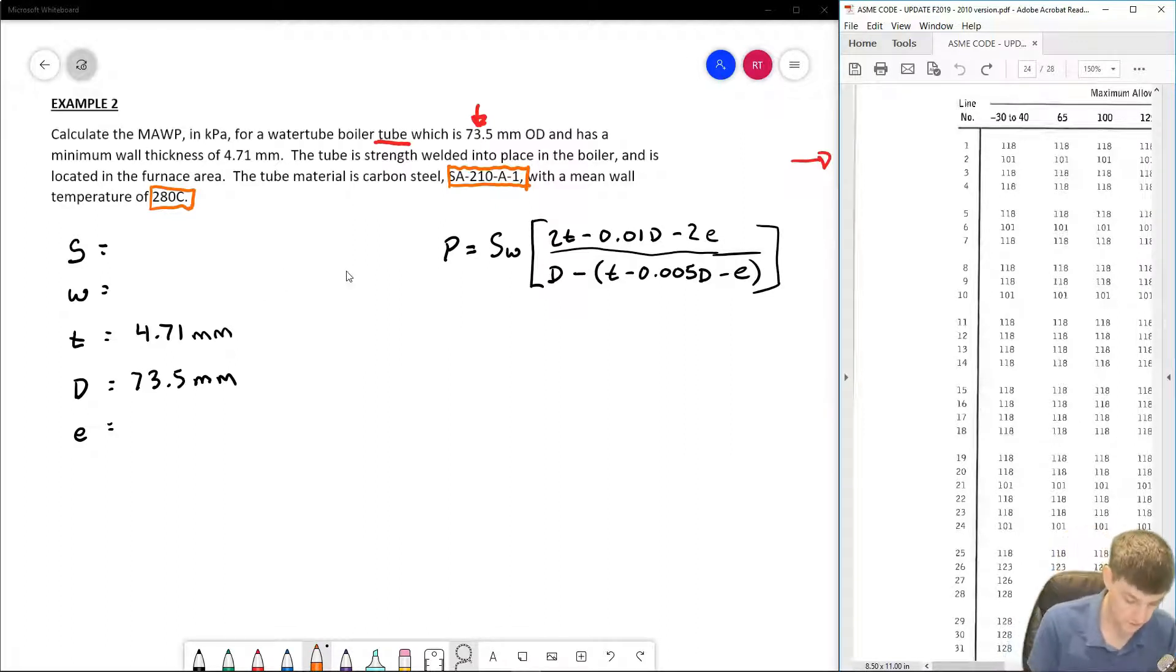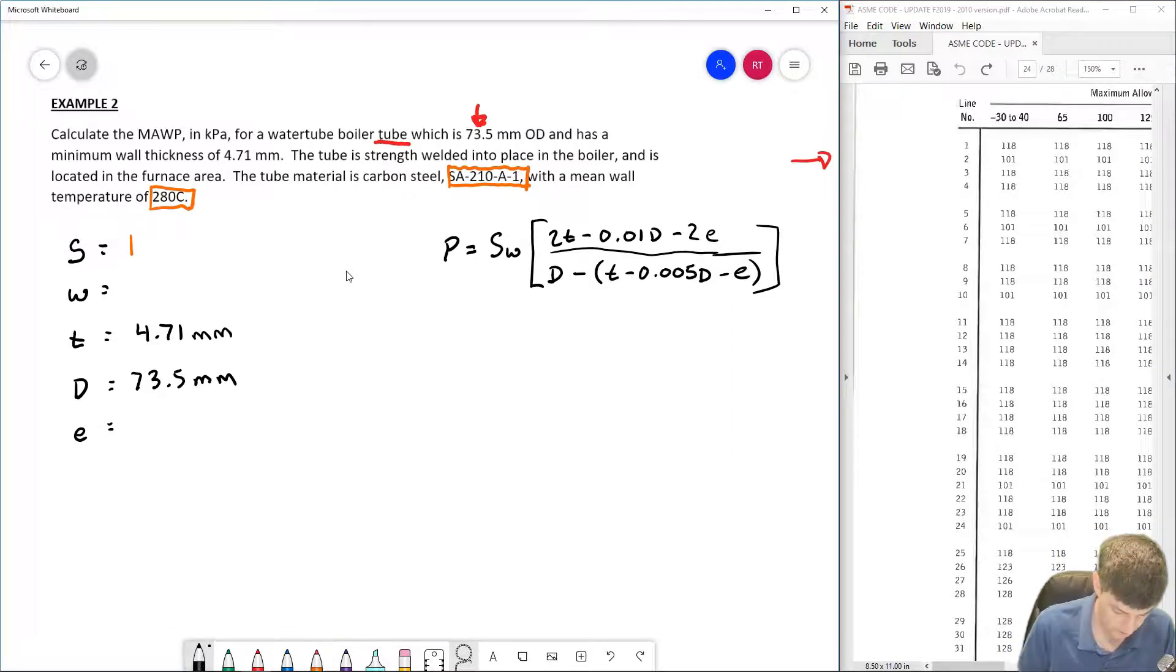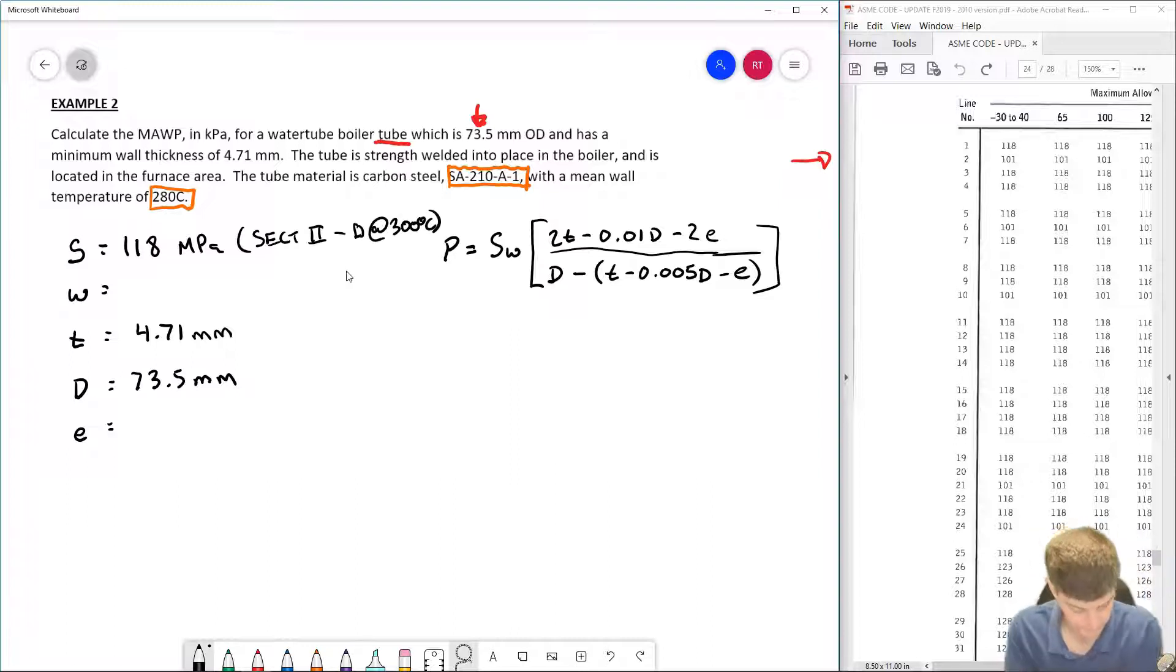Okay, so my stress value of 118 MPa, and if we're making notes, that was out of my section two table D, and maybe we even say at 300 degrees Celsius.